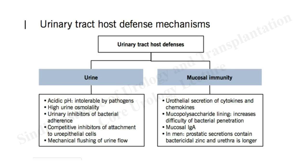Summary of urinary tract host defense mechanisms: in the urine — acidic pH, high osmolality, urinary inhibitors of bacterial adherence including glycosaminoglycans, uroplakins, Tamm-Horsfall proteins, and toll-like receptors acting as competitive inhibitors of attachment to uroepithelial cells. Also mechanical flushing from urine flow, urothelial secretions of cytokines and chemokines, mucopolysaccharide lining increasing difficulty of bacterial penetration, mucosal IgA, and in men, prostatic secretions containing bactericidal zinc and a longer urethra.